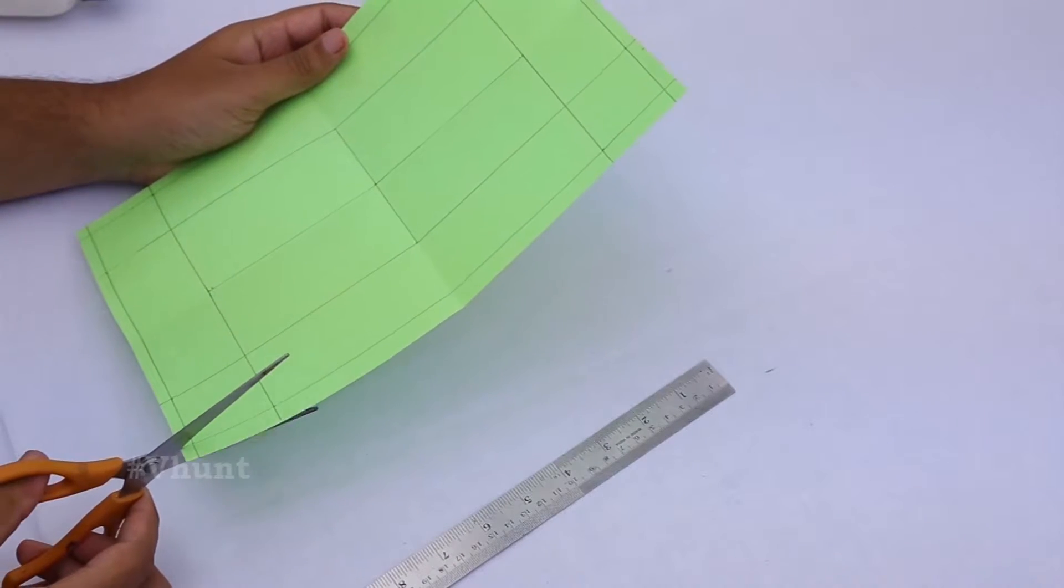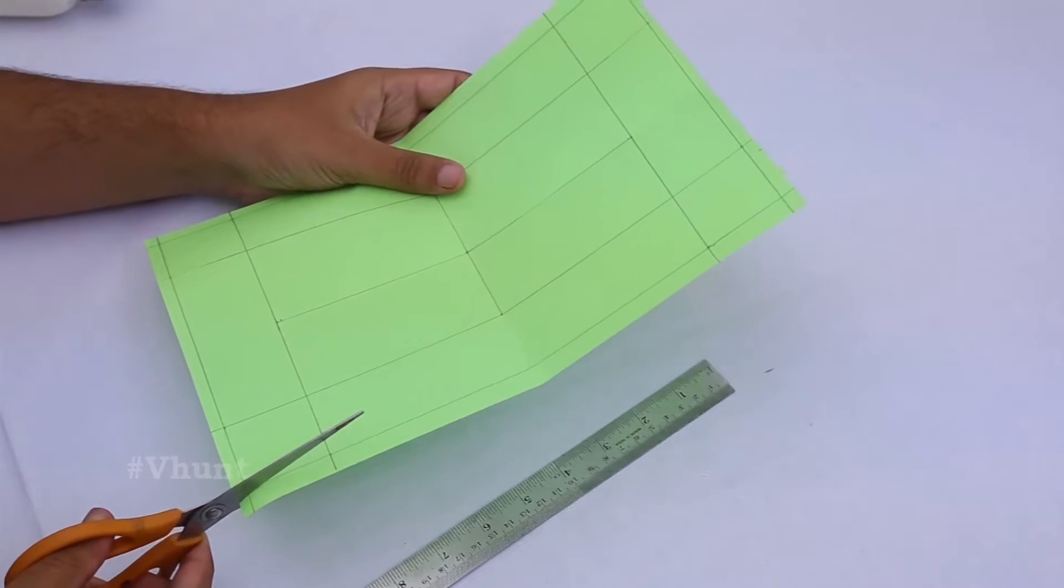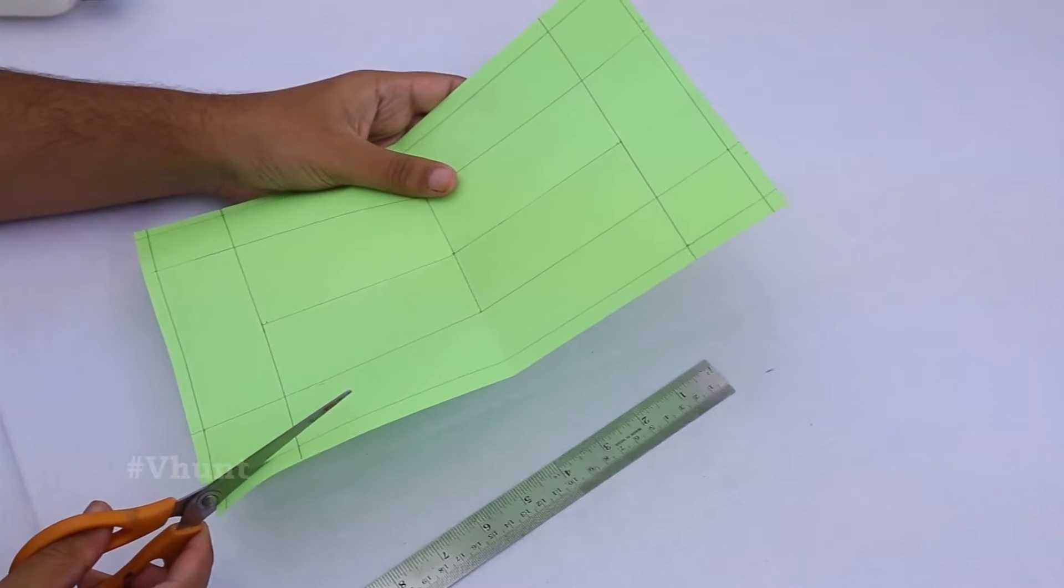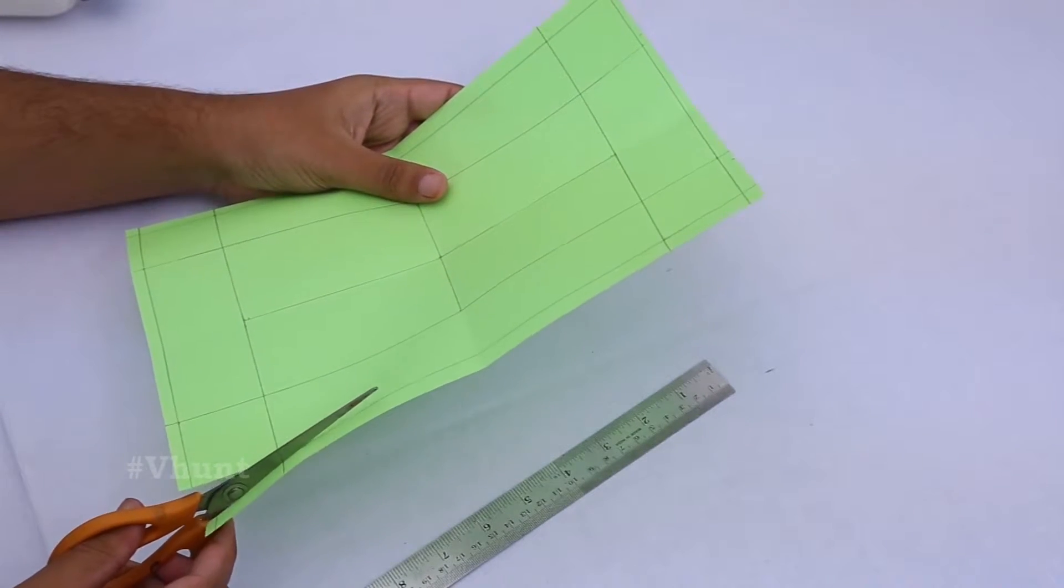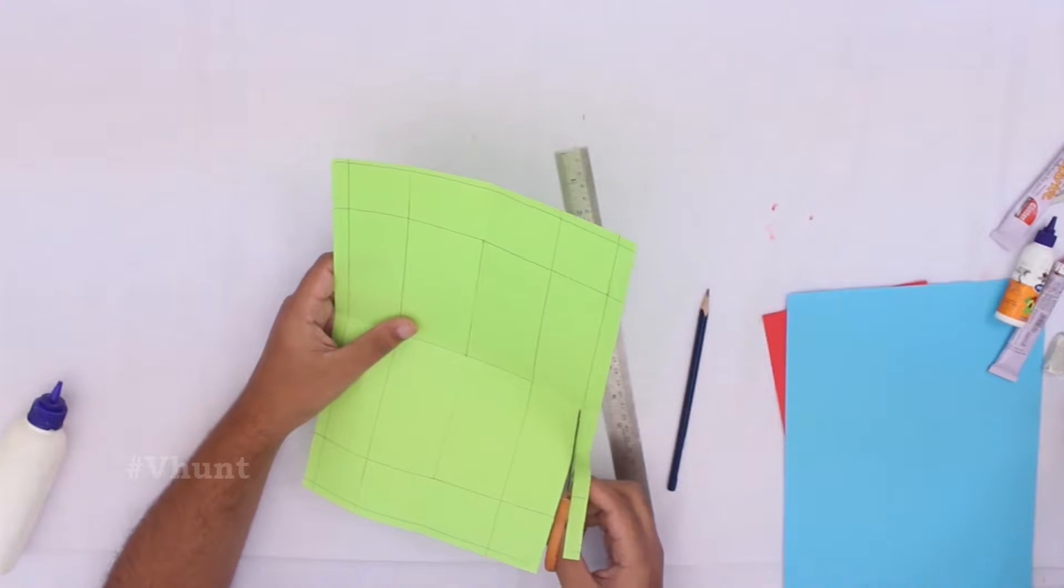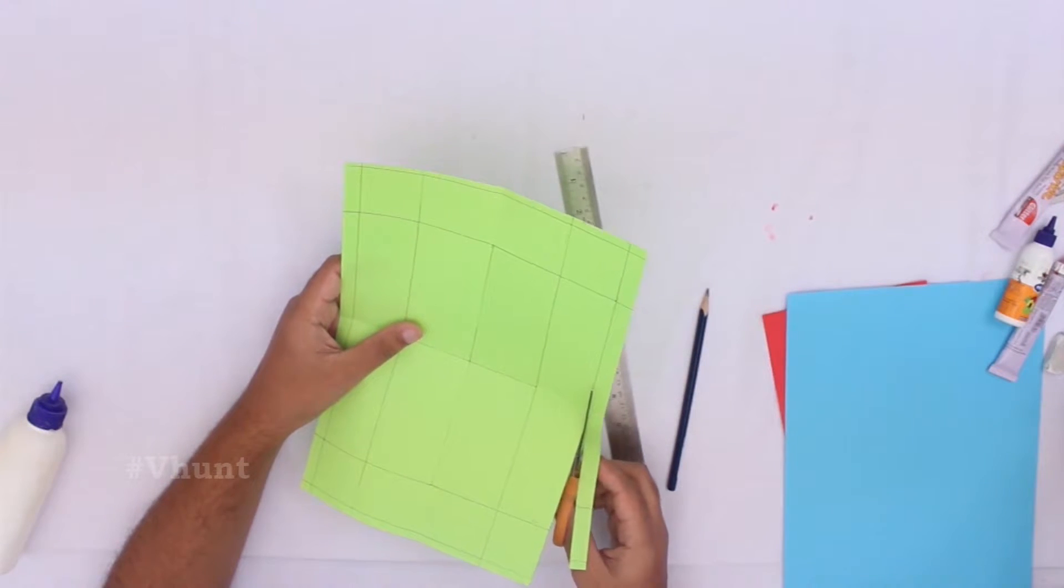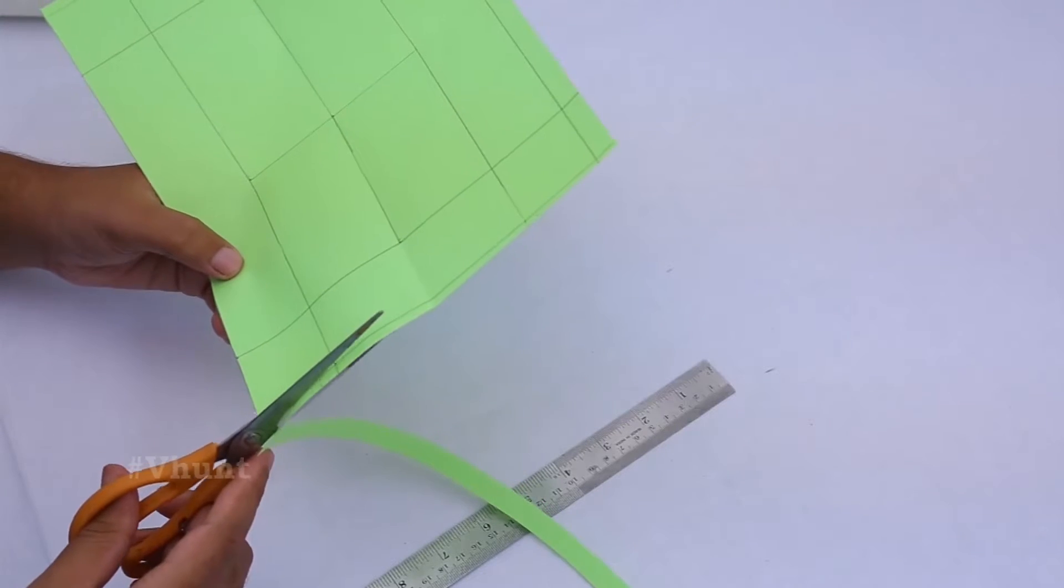After this, you will get square pieces at the corners of the paper. Remove the excess paper using scissors, cut them this way, and fold like this.